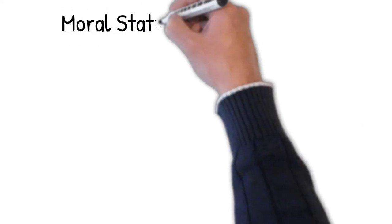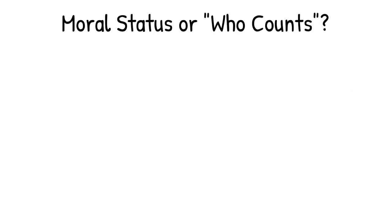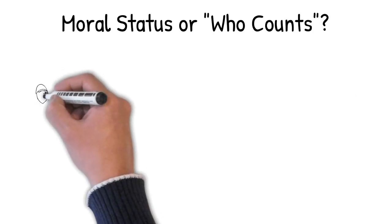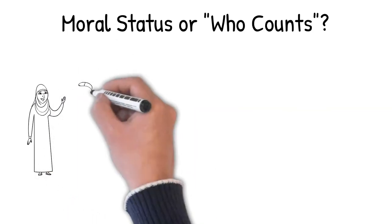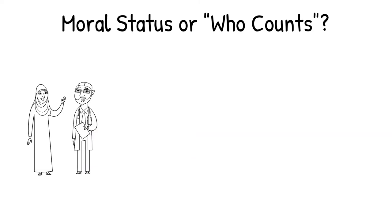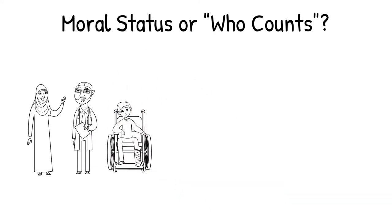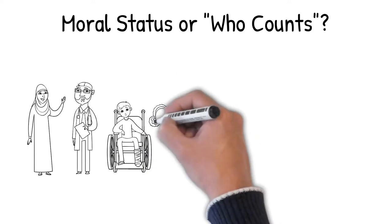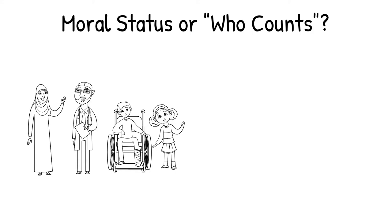We should now turn our attention to the question of moral status. In short, moral status can be thought of as a matter of who counts within our moral community, and what kinds of moral obligations we owe to these members of that community. So, for example, an adult human being counts as a full member within our moral community, and gets the highest amount of moral considerations and moral obligations that come with being a full member.